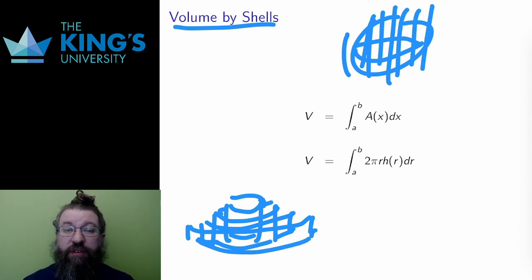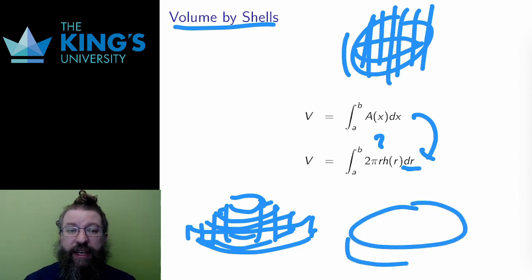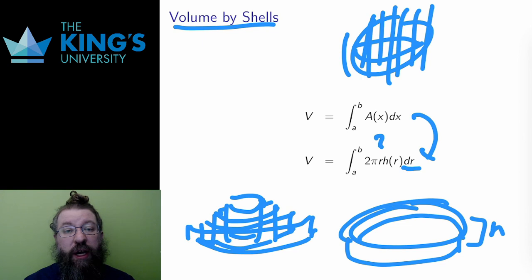The way to set up this kind of volume integral is generally the same as in the previous video. There is an area and there is a width dr. However, what is the area? Well, a very thin cylinder is sort of like a rectangle wrapped around into a circle. Its area is its height, which is variable in this case, and its circumference, which is 2π times its radius.